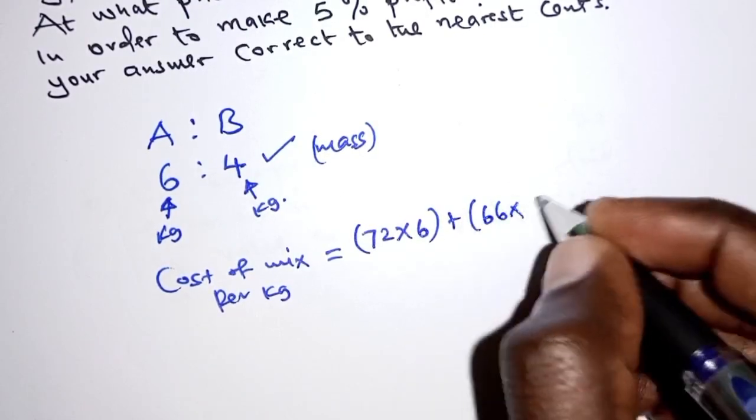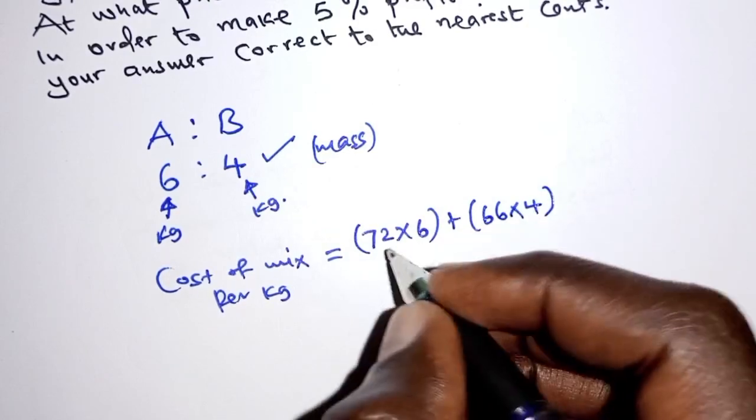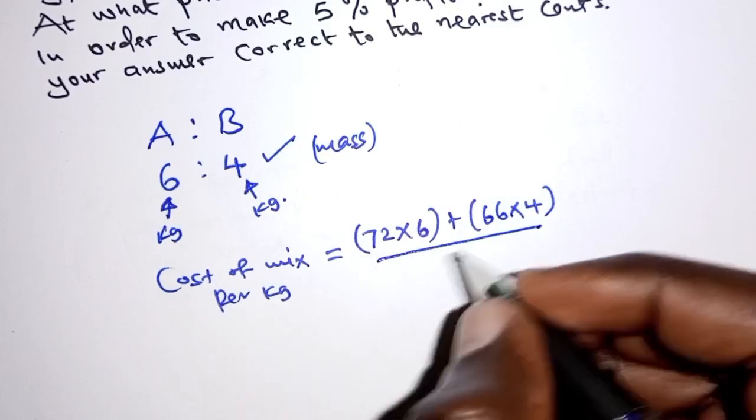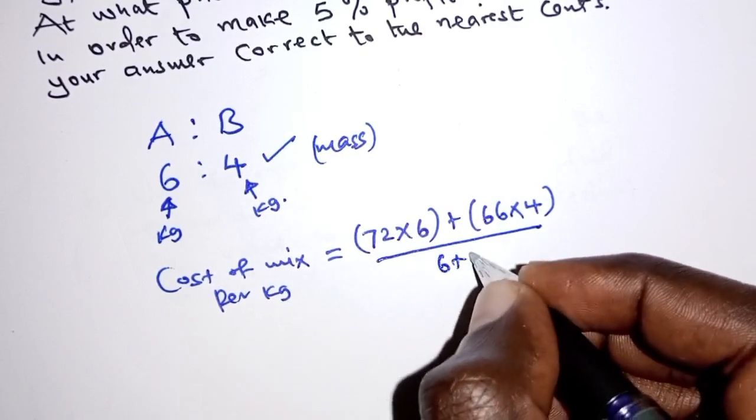For type B, we have 66 shillings per kilogram and they are 4 kilograms, and then we'll have to divide that by the total number of kilograms, which is 6 plus 4.